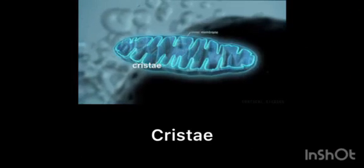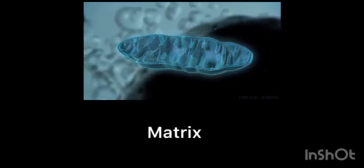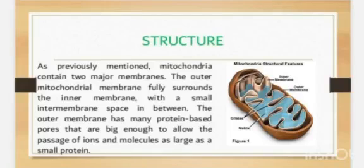The outer membrane is smooth whereas the inner membrane surrounds the matrix. Mitochondria contain two major membranes: the outer mitochondrial membrane fully surrounds the inner membrane with a small intermembrane space in between. The outer membrane has many protein-based pores that are big enough to allow the passage of ions and molecules as large as a small protein.